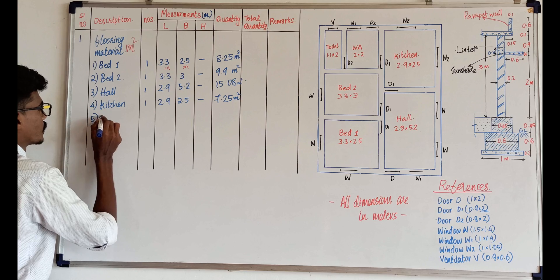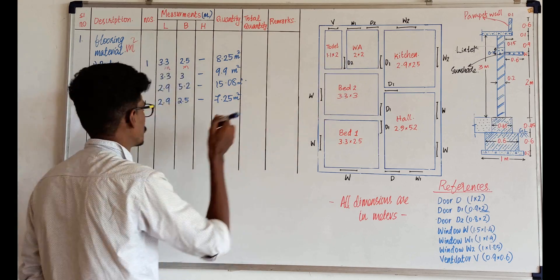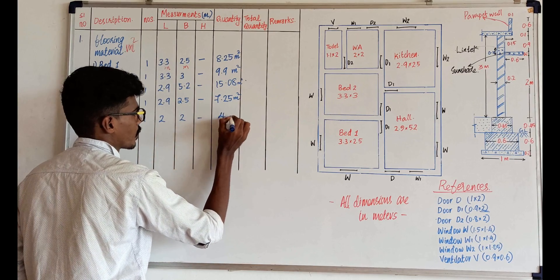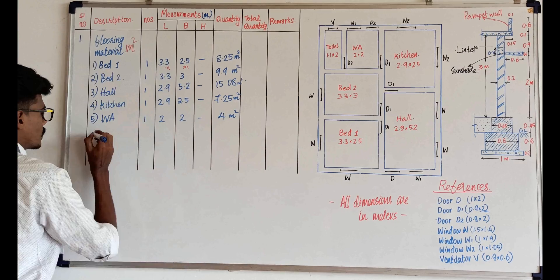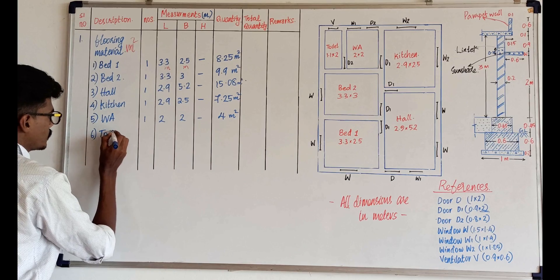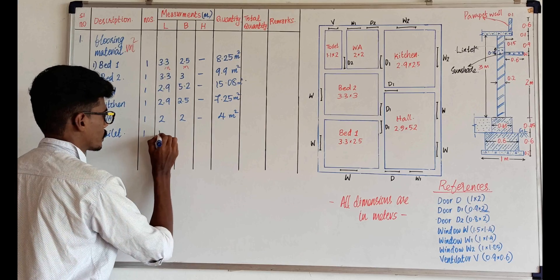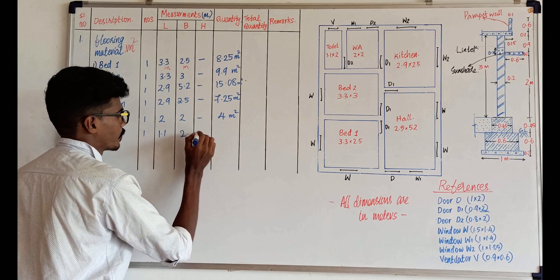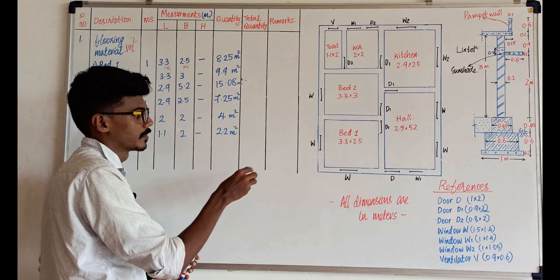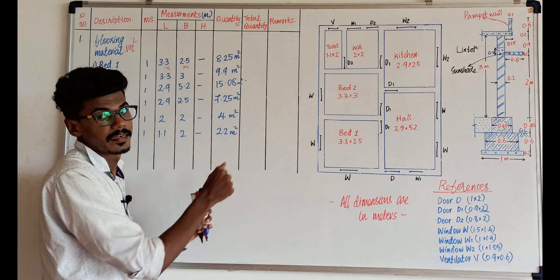Fifth one: Work area. 2 x 2 = 4 m². Answer. Last and final one — sixth one: Toilet. Dimension 1.1 x 2. 2.2 m². Answer. Now, we would look at the inner space and inner area of the picture.